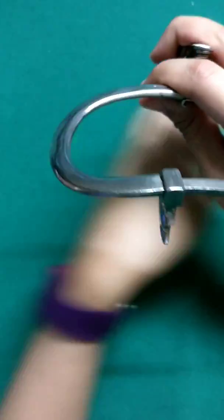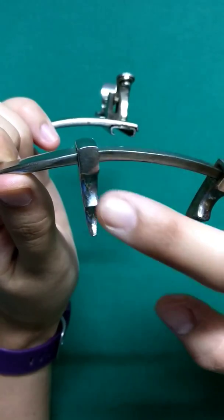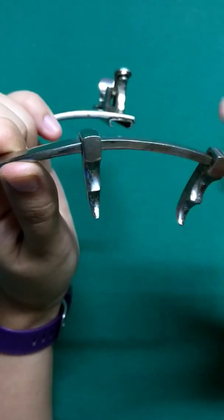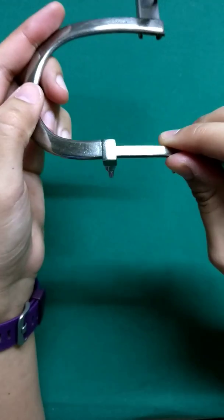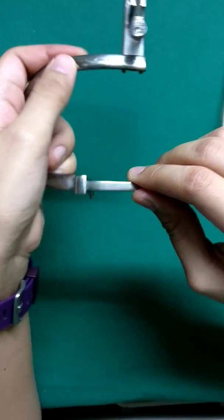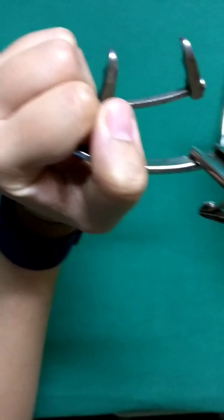There are two further clasps over here. This is for the upper lip and this is for the alveolus. Then only the frame will sit properly during the surgery and while insertion it has to be held in this position and inserted.